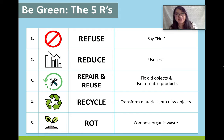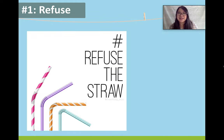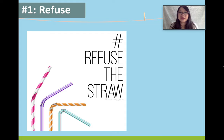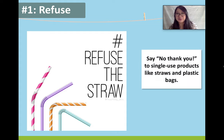Let's look at each one in a little more detail. Number one is refuse — say no. Refuse the straw. There are many products that are pretty easy to refuse, like straws, plastic coffee cups, plastic water bottles, and plastic spoons and forks. There are times when they're needed or convenient, but it's also very easy to bring our own alternative. Whenever you can, say no thank you to single-use products like straws and plastic bags. You can bring a metal straw or an eco bag.